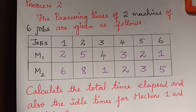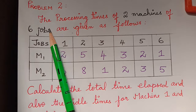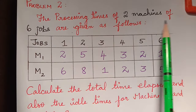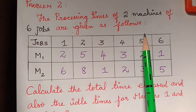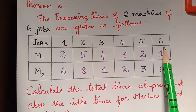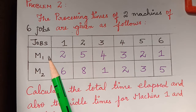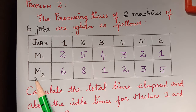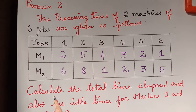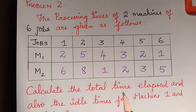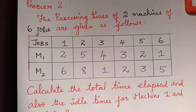Hello students, we shall now solve this sequencing problem. The question gives processing times of two machines for six jobs. We have two machines and six jobs, and they are asking us to calculate the total elapsed time and the idle times for machine one and machine two.